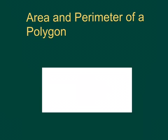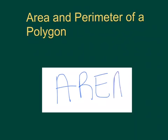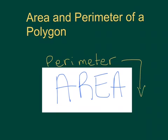As a review, remember area is the inside, the space on the inside of a polygon, and perimeter is the distance around the outside of the polygon.